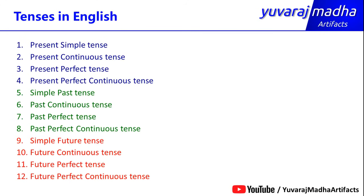We have already covered three classes: present simple, present continuous, and present perfect. And in class number 4, we have present perfect continuous tense.